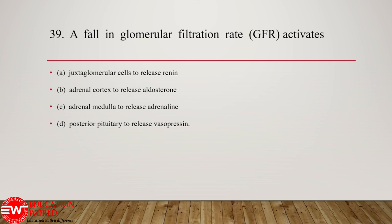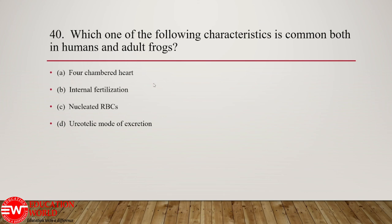Question number 39: if the glomerular filtration rate decreases, it will activate JGA cells — the juxtaglomerular cells of the nephron release renin, which activates the RAS system and causes an increase in GFR. Question number 40: which of the following characteristics is common to both humans and adult frog? Four-chambered heart is incorrect because the frog heart is three-chambered. Internal fertilization is incorrect because frogs have external fertilization. Nucleated RBC is incorrect because human RBCs have no nucleus. Option D — ureotelic mode of excretion — is correct. Adult frogs are ureotelic, and likewise humans are also ureotelic.